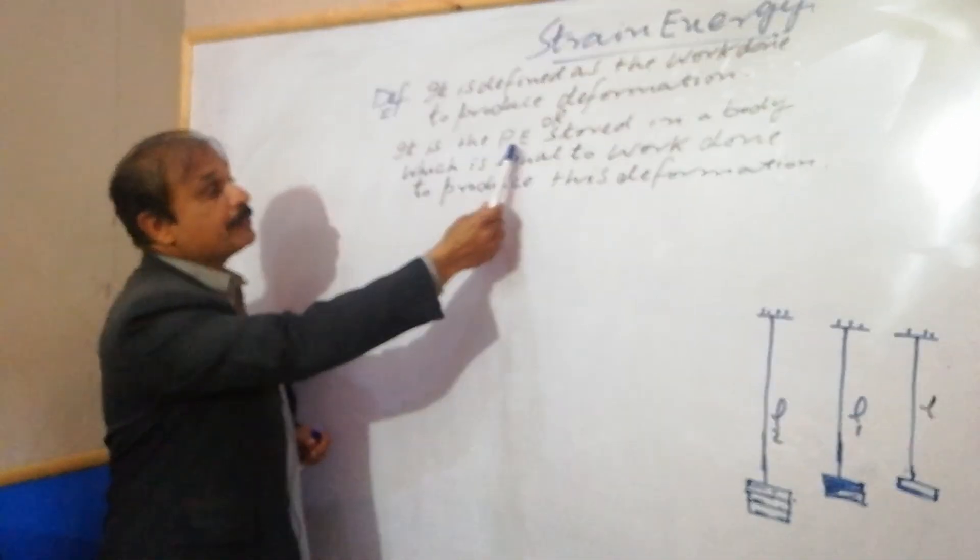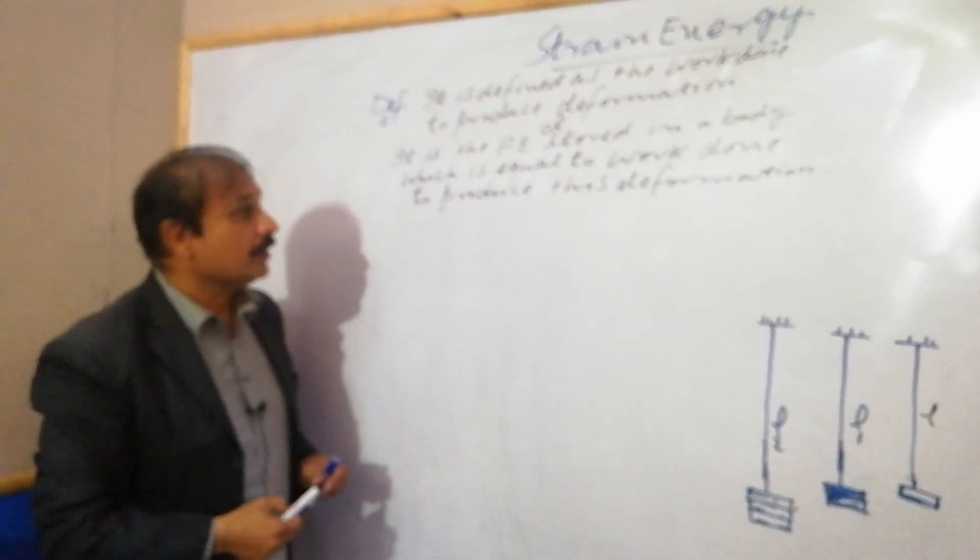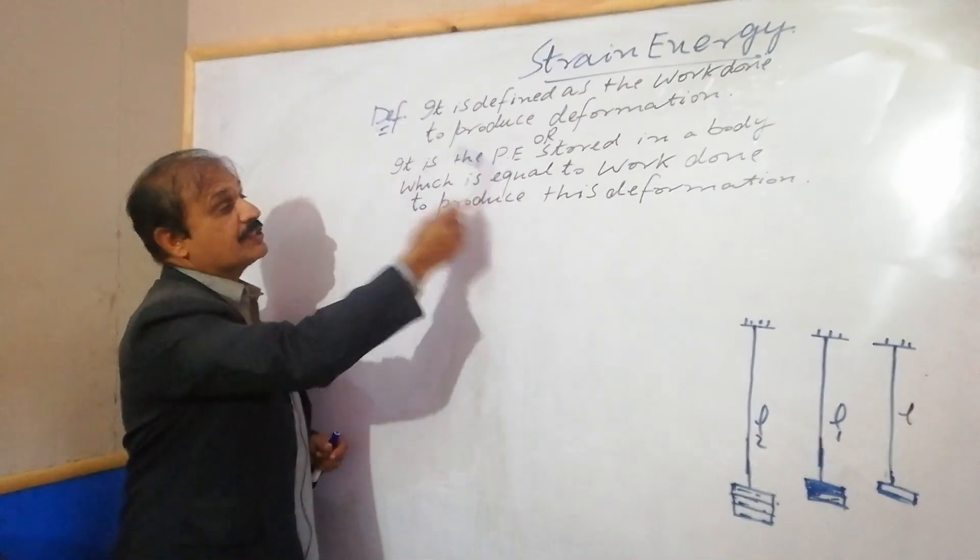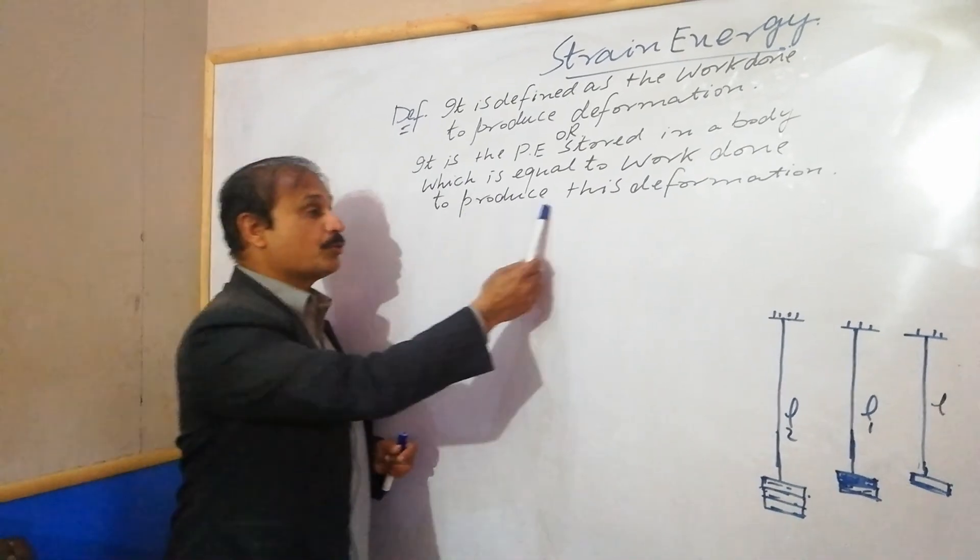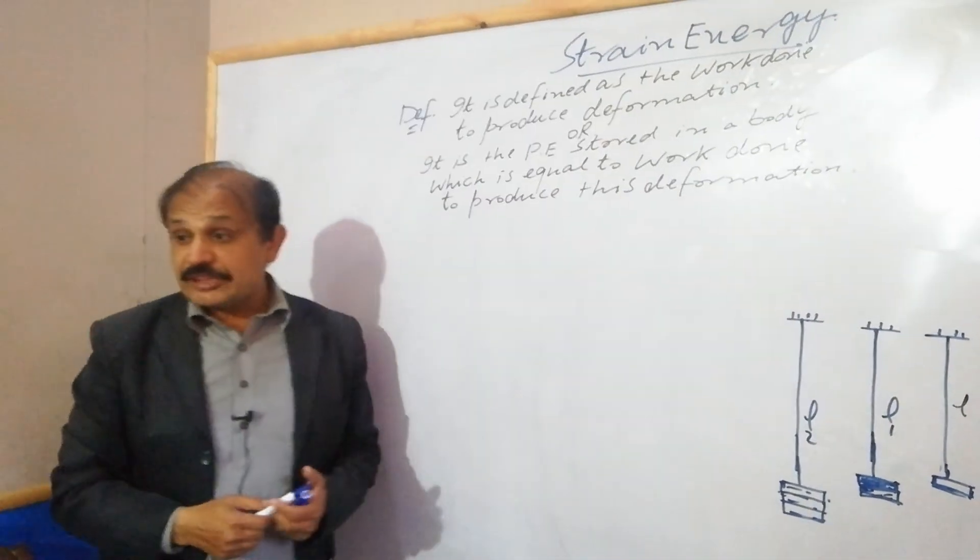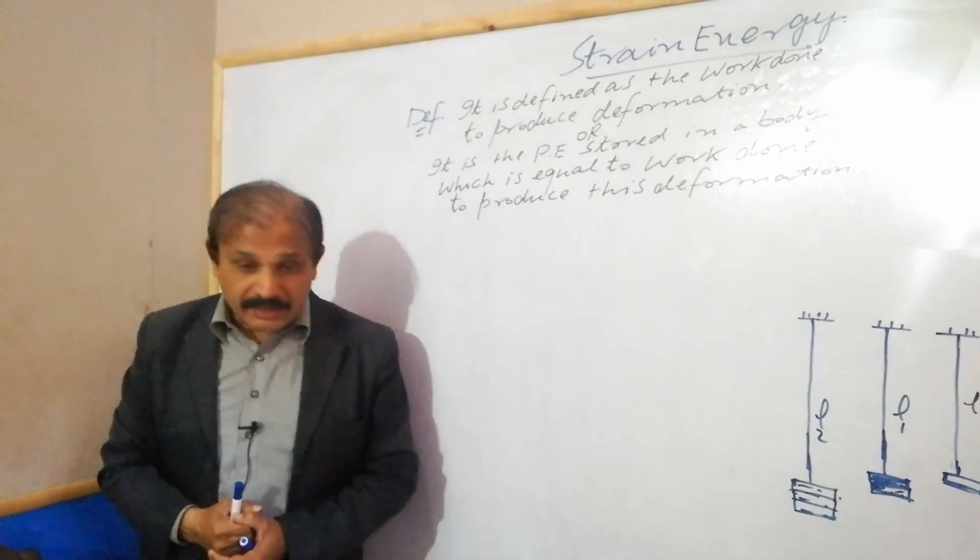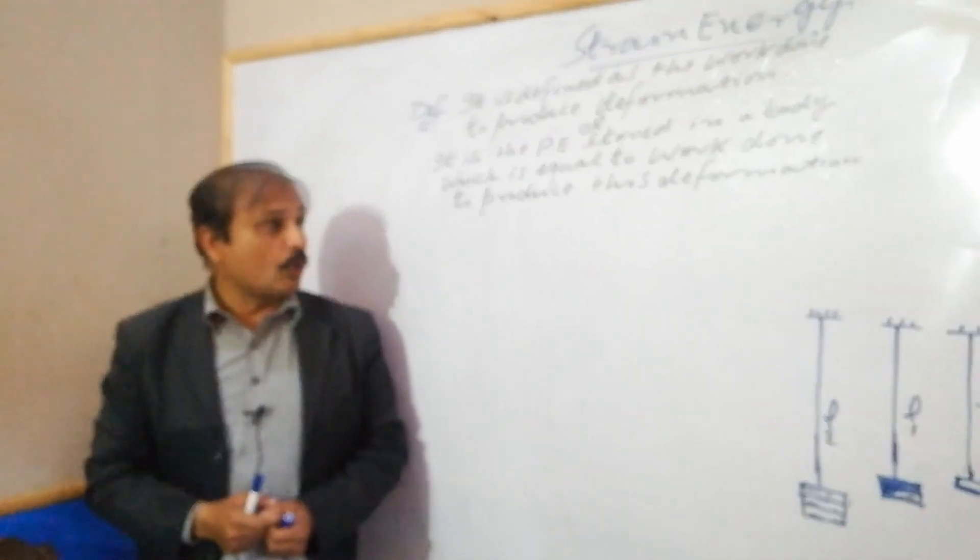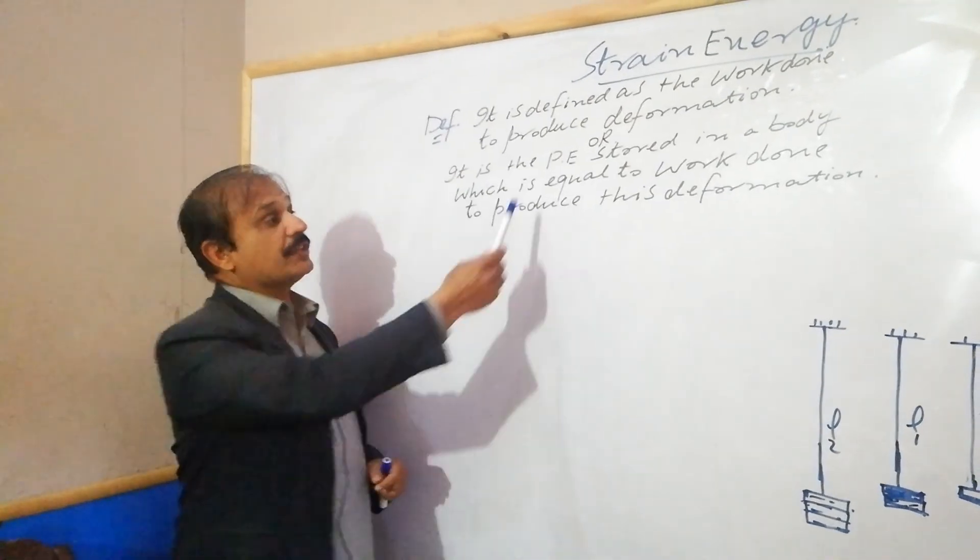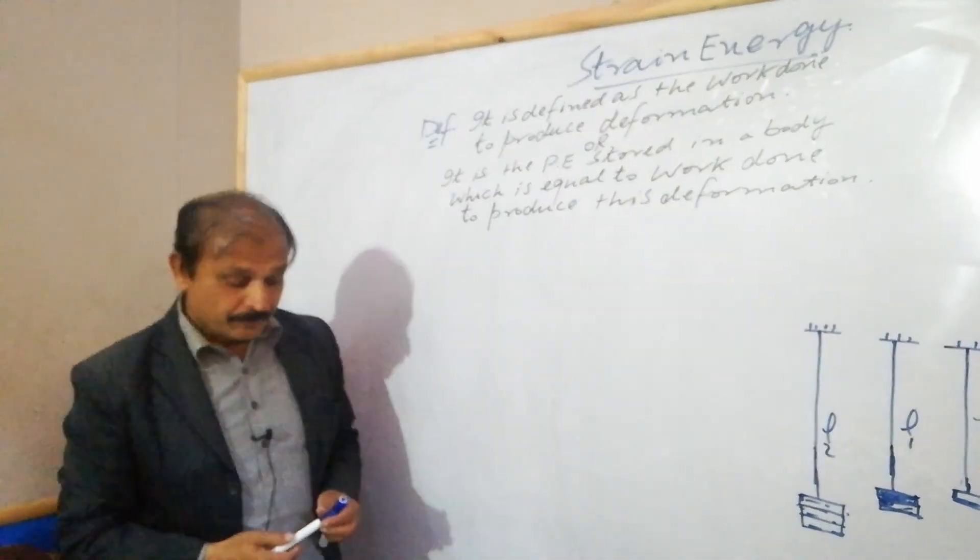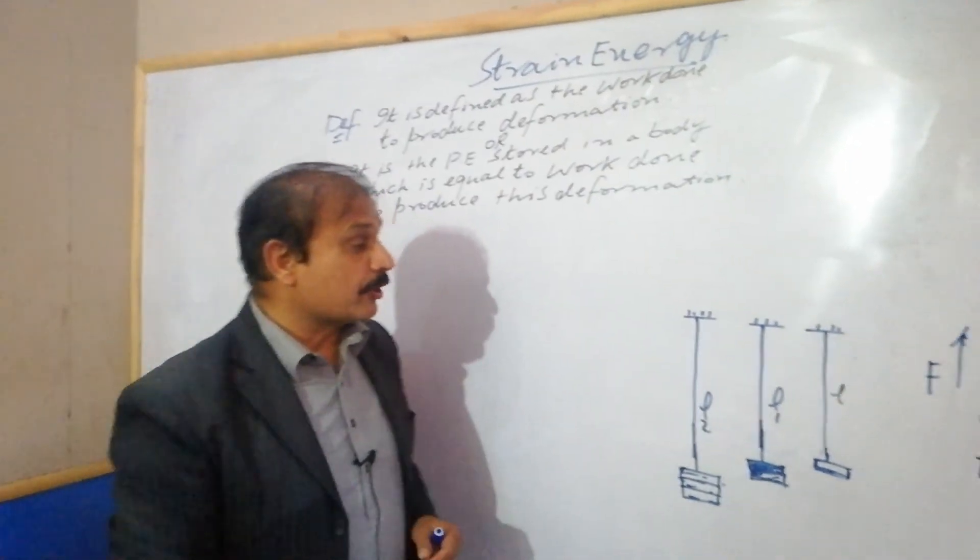The second definition is: it is the potential energy stored in a body, which is equal to the work done to produce this deformation. The change in the body - whatever work is done - that gives us strain energy. Strain energy is actually a potential energy. First, we do an experiment. Look at this diagram.